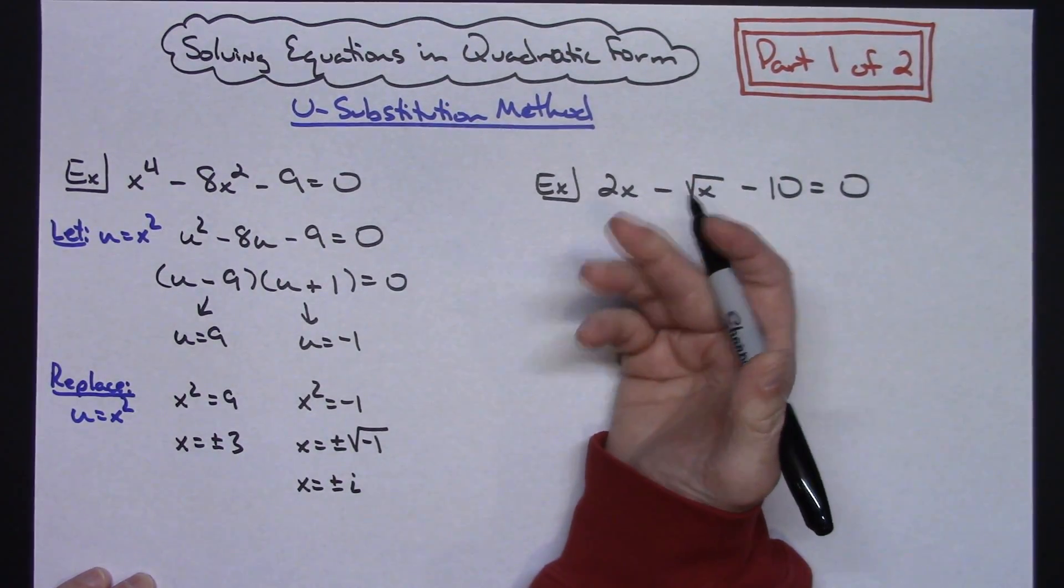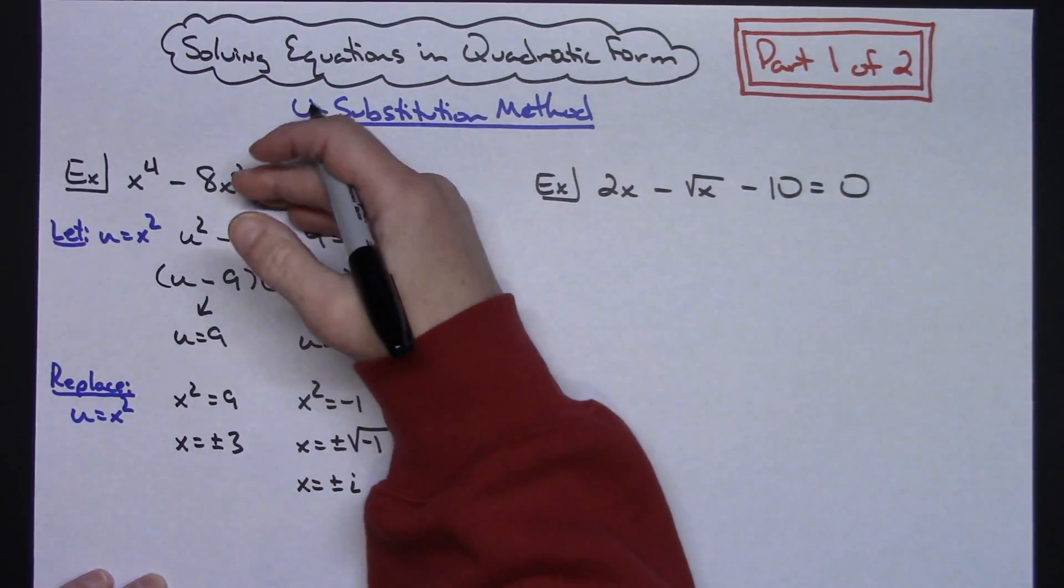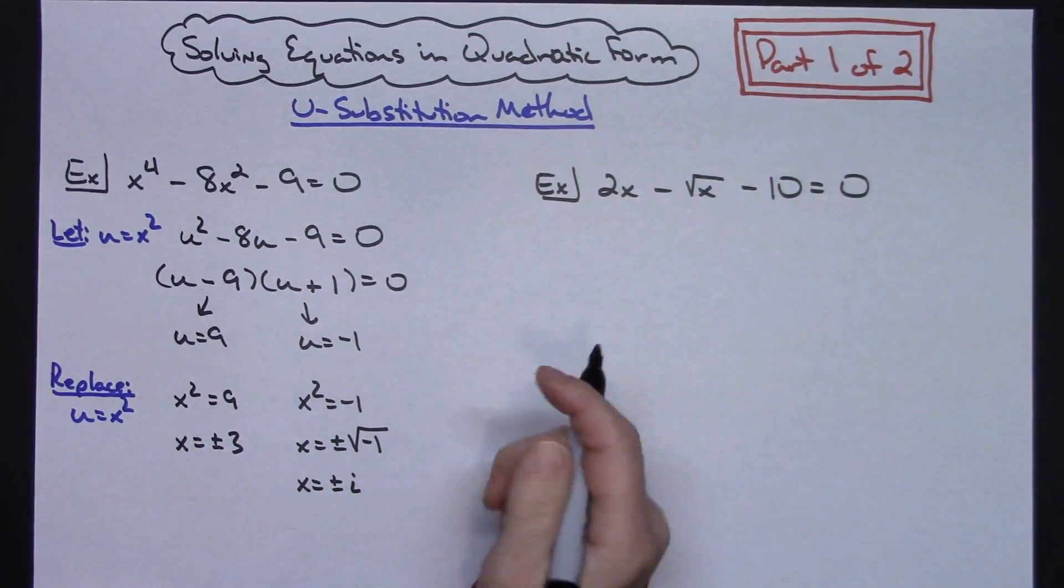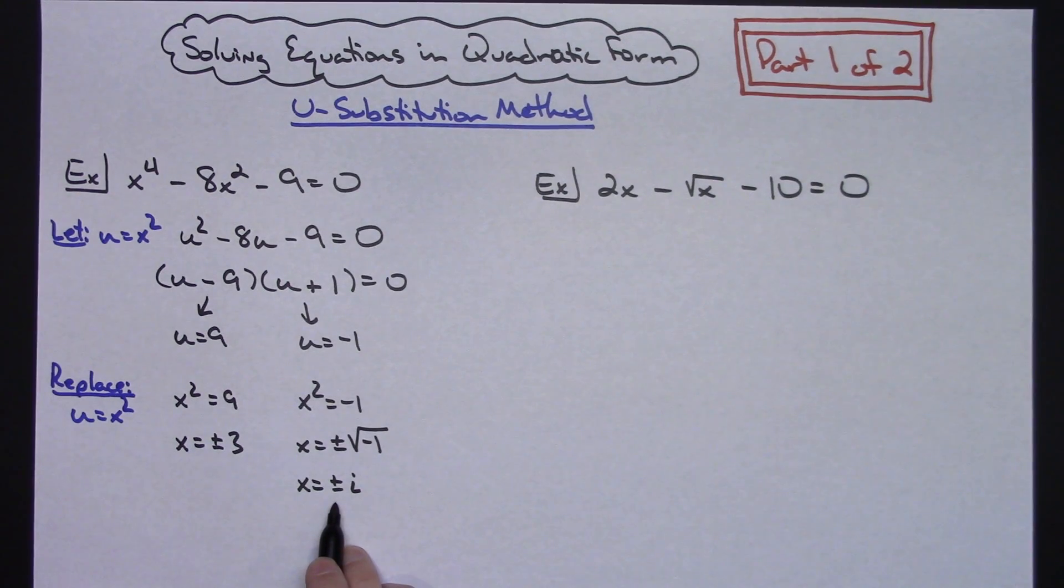Now as with any equation, not just equations in quadratic form, you should always take your answers and check them back in that original equation to make sure they work. All these do work. Your ±3 works. You've got two real solutions. You've got two imaginary solutions. So for that first one, straightforward.